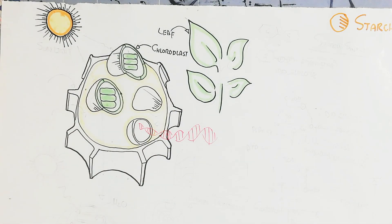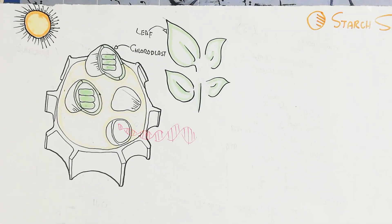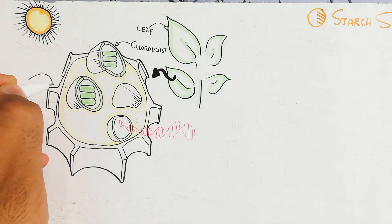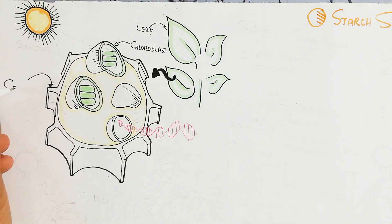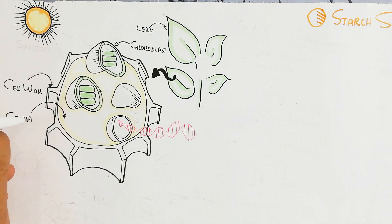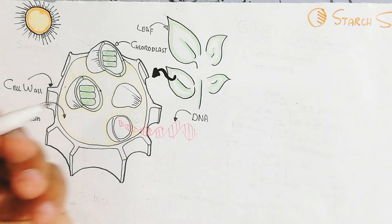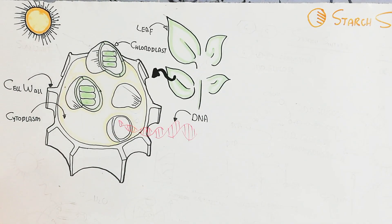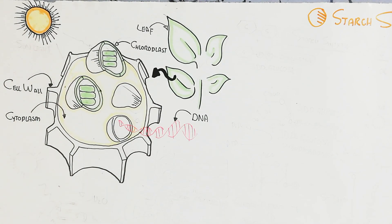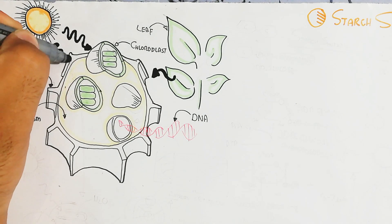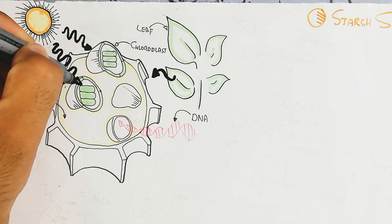Ultimately glucose will be used to form starch. This is the leaf cell, like a mesophyll cell, which contains a cell wall and cytoplasm. It also contains DNA, and the chloroplast is the major organelle. We will understand how light falls on the chloroplast.